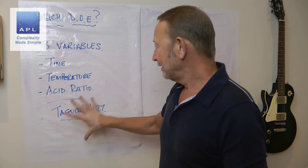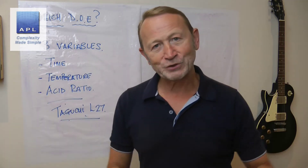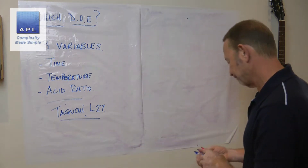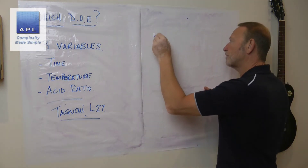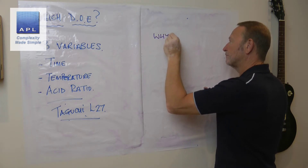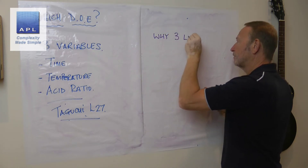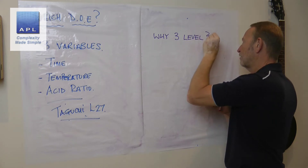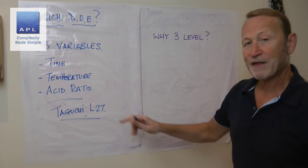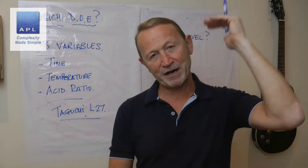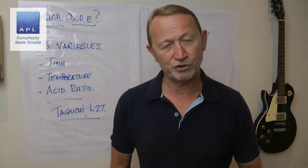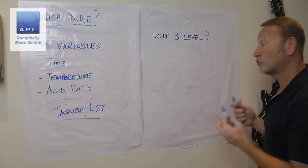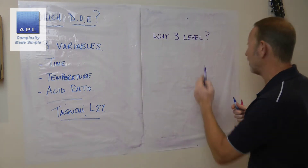So would the Taguchi L27 be my choice? Absolutely not. Here are some things to think about when you're choosing your DOE. The first thing is: why are you choosing a three-level experiment? That's partly what makes the experiment so long to conduct. My advice would be to choose a two-level experiment instead.